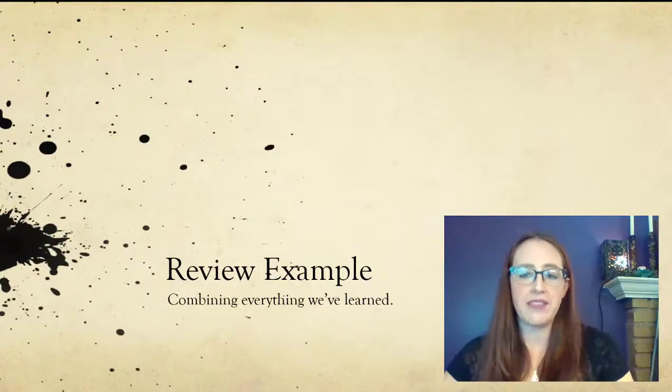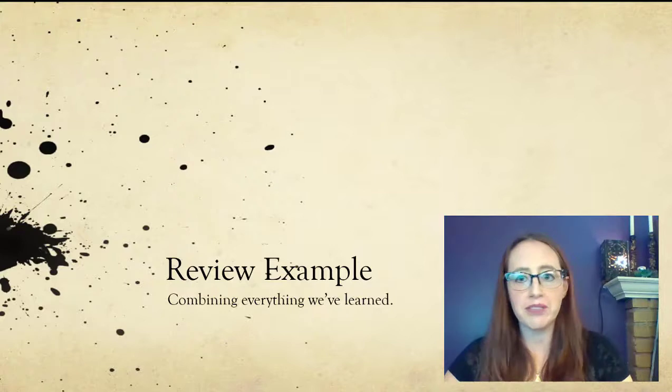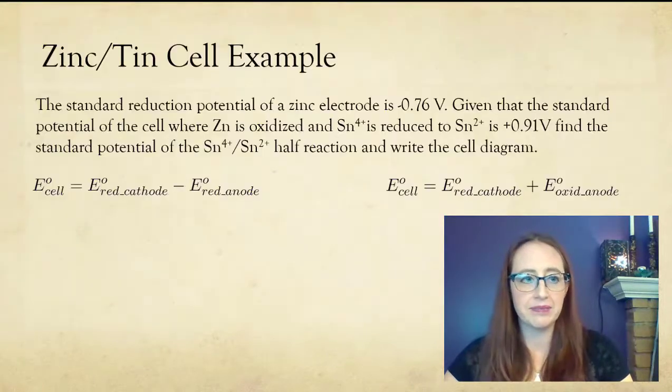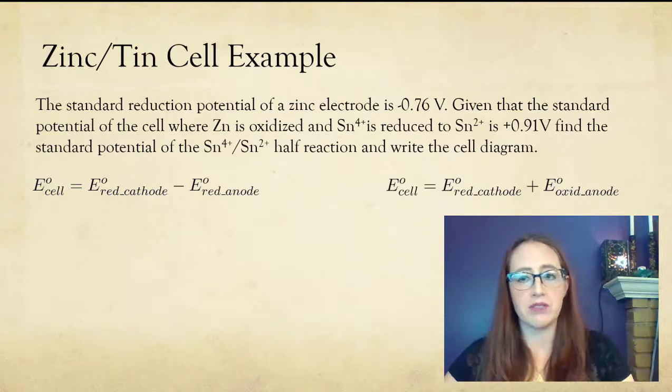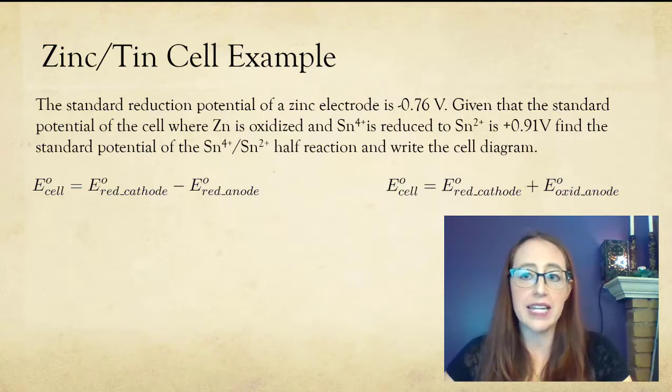Let's do an example combining many of the things that we've learned throughout the previous videos in this chapter. This is a bit of a reverse of some of the other problems that we've done in previous examples. Here I want you to solve for one of the half-reactions standard potentials instead of starting from that.